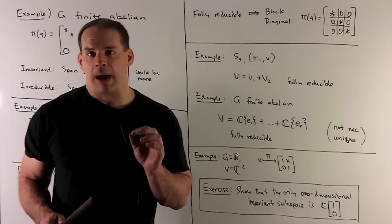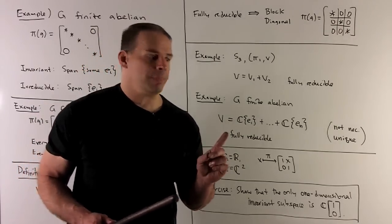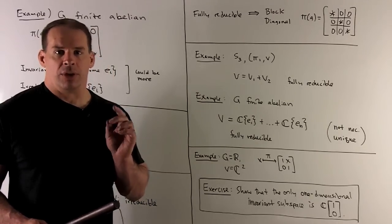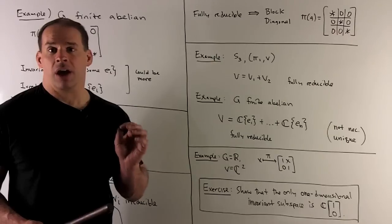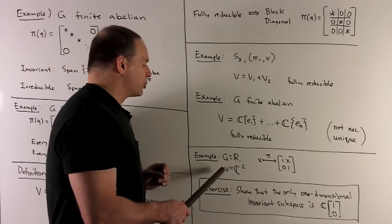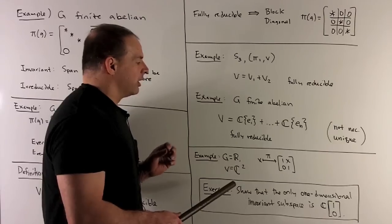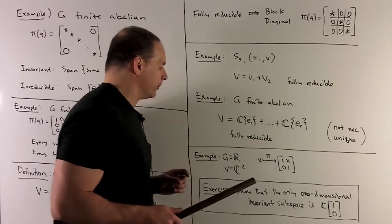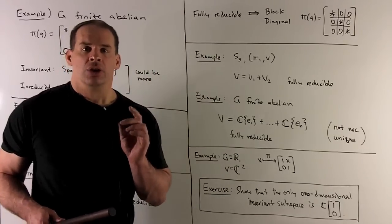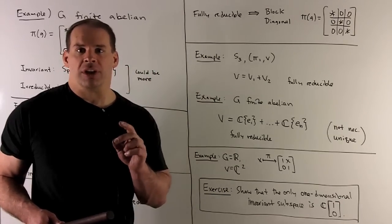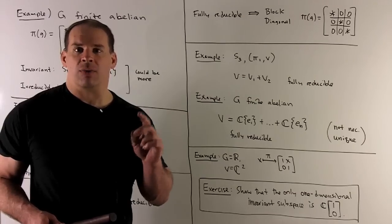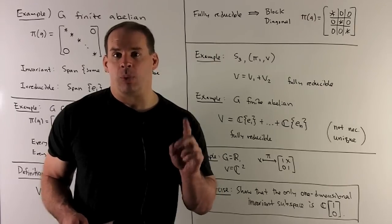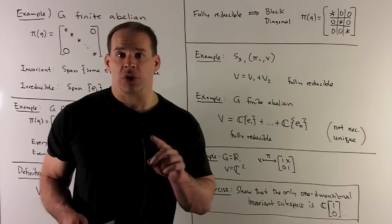As a final example, we want a representation that is not fully reducible. We won't be able to use a finite group; instead, we use the group ℝ, the real numbers under addition. The vector space is ℂ², and our representation takes the real number x and sends it to the matrix [[1,x],[0,1]]. Exercise: show that the only one-dimensional invariant subspace is the span of (1,0). Because of that, you're not going to be able to find another invariant one-dimensional subspace, so this representation is not fully reducible.